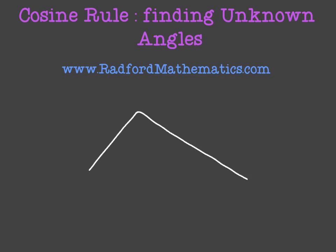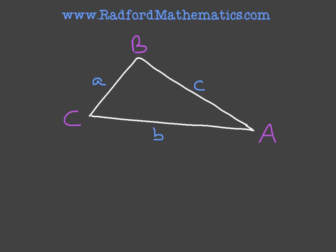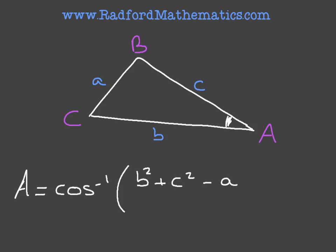Let's start off by drawing the generic triangle here, which we'll label the usual way: a, b, and c, with side lengths a, b, and c. Now, let's assume that we're looking for angle A here, which is this interior angle that I'm highlighting right now. The cosine rule tells us that A is equal to the inverse cosine of b squared plus c squared minus a squared, all of that divided by 2 times bc.